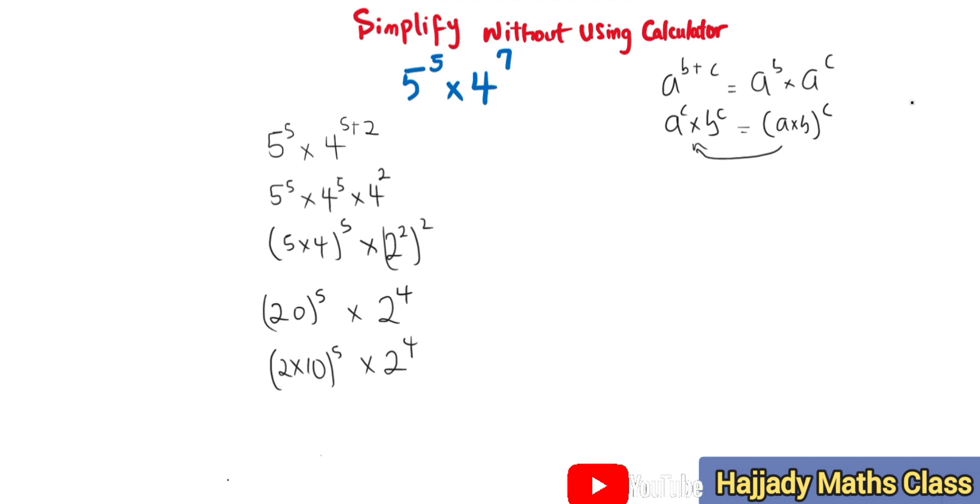So I have 2 raised to power 5 multiplied by 10 raised to power 5 plus 4. So here I have 10 raised to power 5 multiplied by 2 raised to power 9.